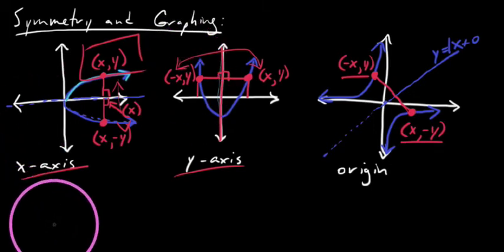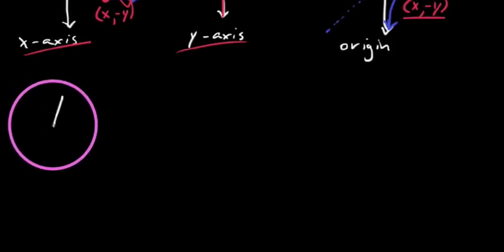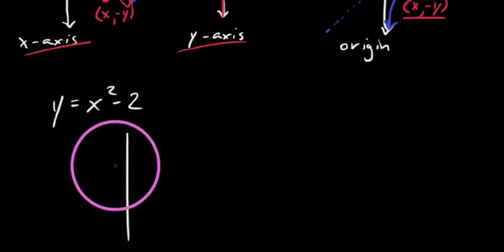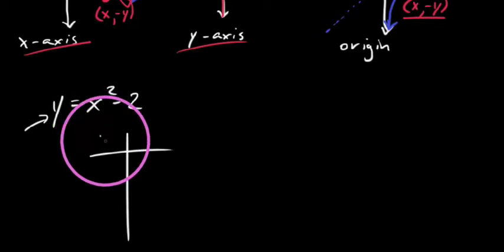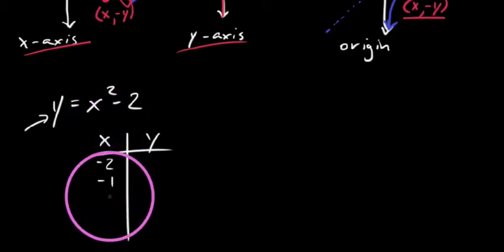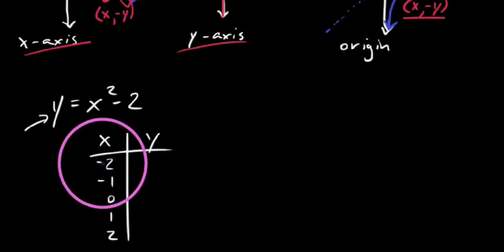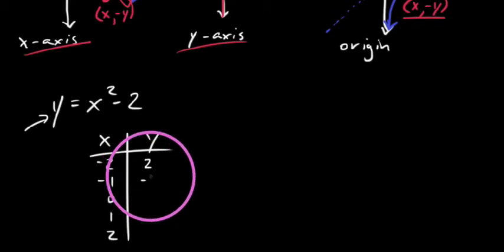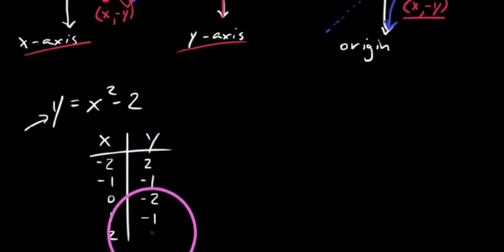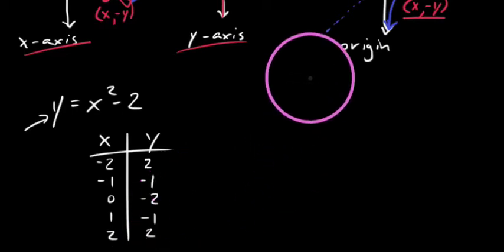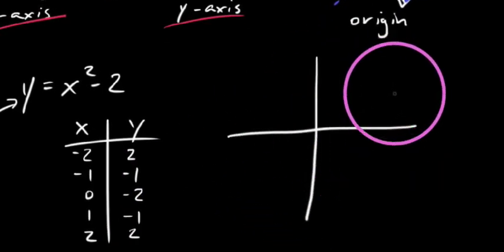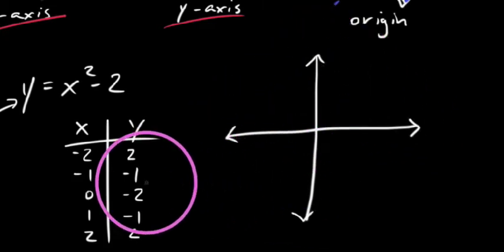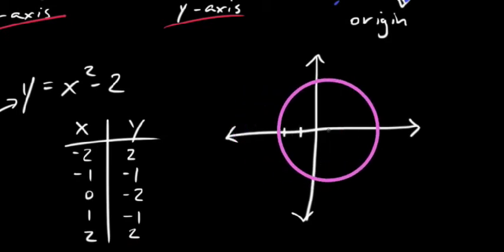We had an interesting graph in the last example — the equation Y equals X squared minus 2. It's a good habit to start talking about these things. We've already got Y isolated, so let's make a table of values. Plugging in X values: negative 2 squared is 4, minus 2 is 2; negative 1 gives negative 1; zero gives negative 2; and then back up to 2. Once we've got this table of values, it gives us a lot of insight into this graph.